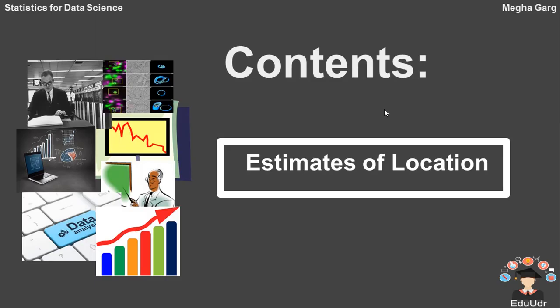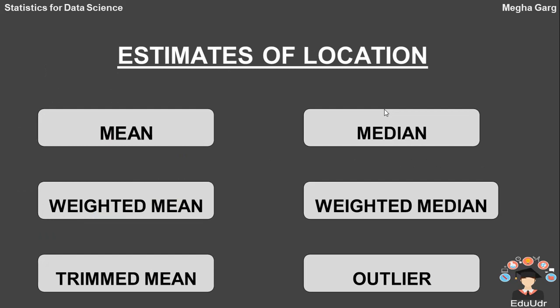Today we will study about the Estimates of Location. Statisticians often use the term estimates of values calculated from the data at hand to draw a distinction between what we see from the data and theoretically true or exact state of affairs. Variables with measured or count data might have thousands of distinct values. A basic step in exploring your data is getting a typical value for each feature, i.e. variable, an estimate of where most of the data is located. That is Central Tendency.